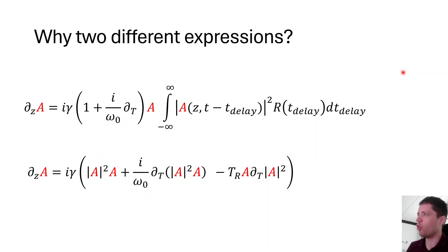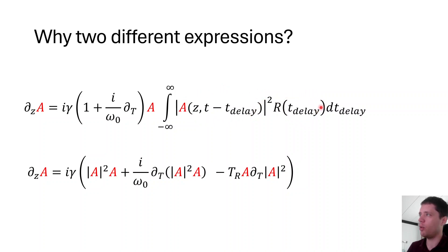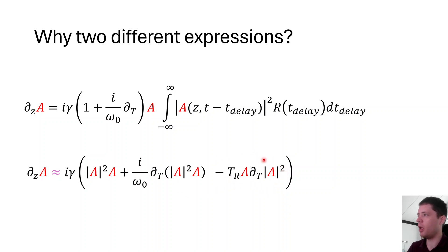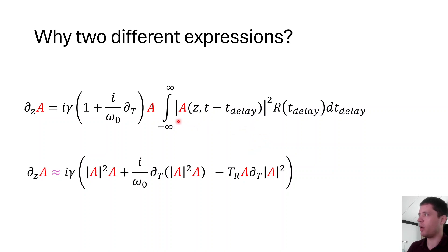You may have seen these two expressions for the impact of the Raman effect. The first is a convolution between the power of the pulse at different times in the past with a total response function. The other version is the approximation which includes simply a gradient. You might be surprised that you can replace a convolution with a gradient and almost get the same result, since these are two very different mathematical operations. Let's look at how we can get from the convolution expression to the gradient one.